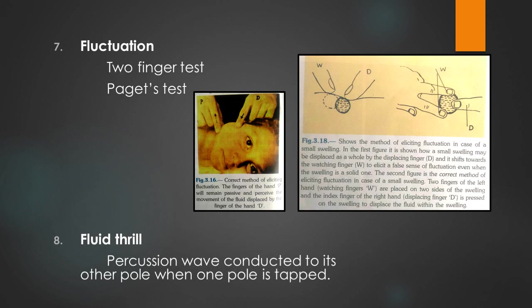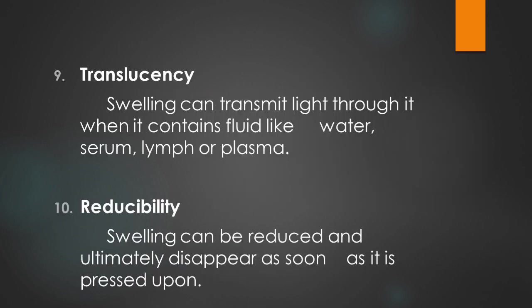Fluctuation is assessed using a two-finger test: one finger remains passive while the other finger perceives the movement of fluid displaced by the first finger. Next, fluid thrill is tested by a percussion wave conducted to the other pole when one pole is pressed — the wave can be felt on the other hand. Translucency: swellings containing fluid like water, serum, or lymph plasma can transmit light. Reducibility: the swelling can be reduced and ultimately disappear when pressed upon.